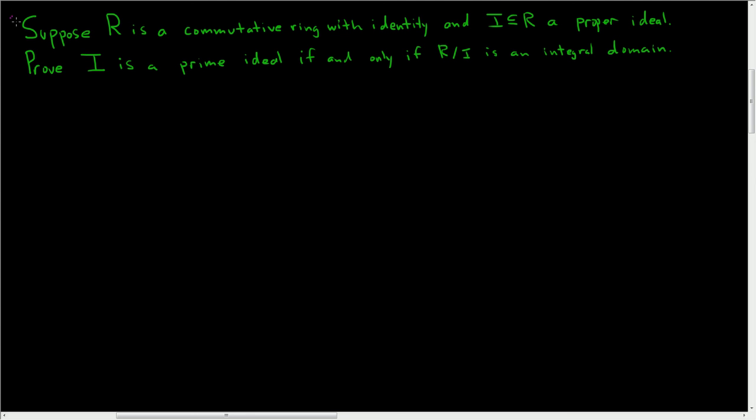Suppose R is a commutative ring with identity and I is a proper ideal. We're going to prove that I is prime if and only if the quotient ring R mod I is an integral domain. So, proof.